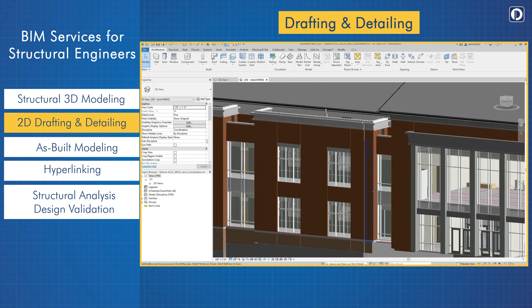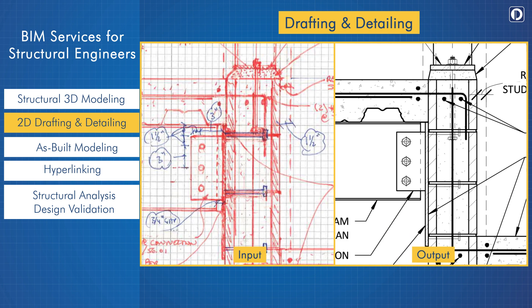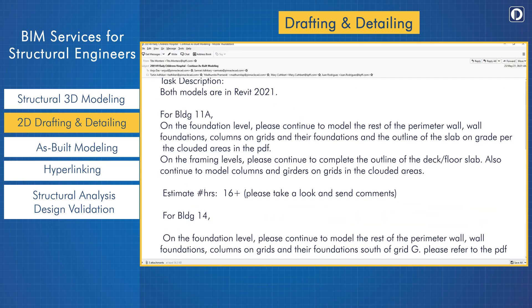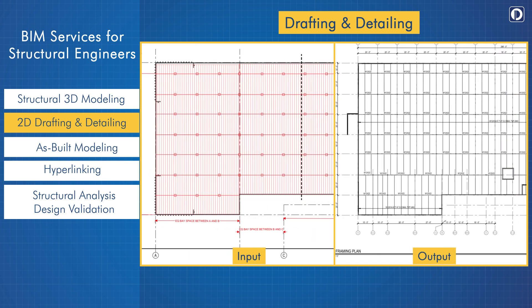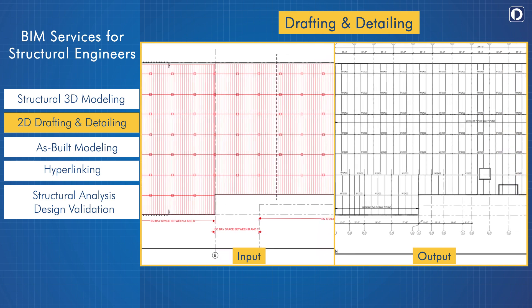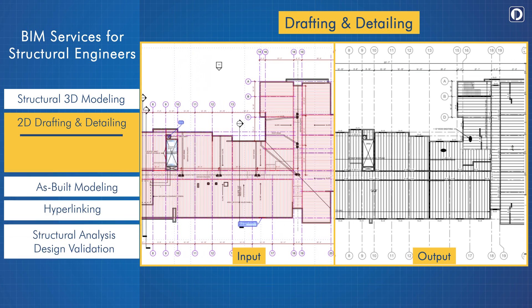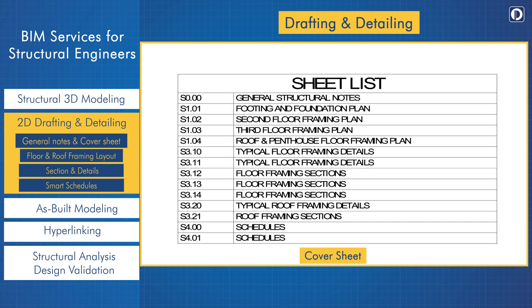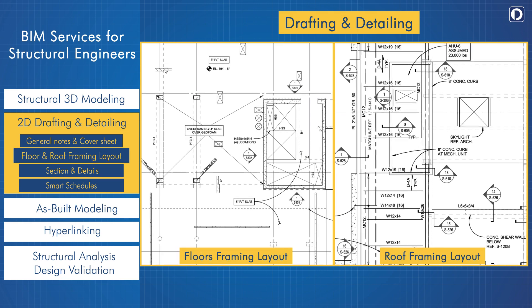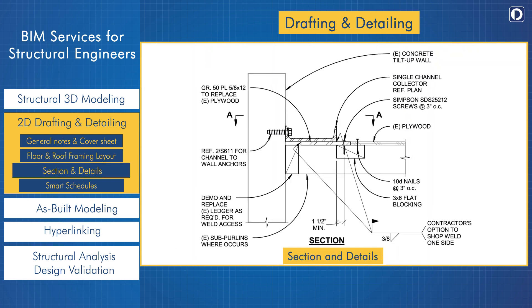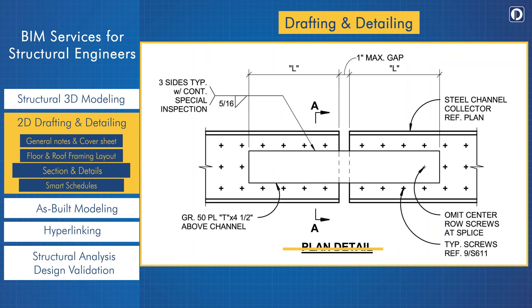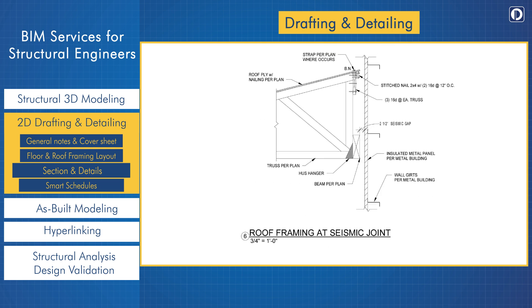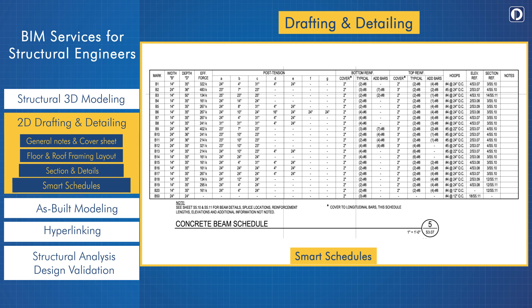Using architectural models, hand sketches, redline markups, and email instructions as inputs, our team prepares standardized drawings across design stages according to the client's drafting standards. The 2D drawings include General Notes and Cover Sheet, 2D sheets for all floors, Roof Framing Layout, 2D sheets for Sections and Details, Foundation Details, Floor Framing Details, Roof Framing Details, and Smart Schedules within Revit.